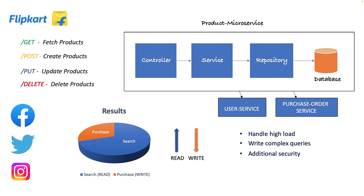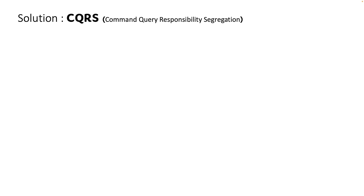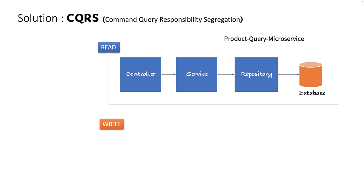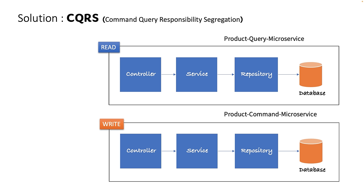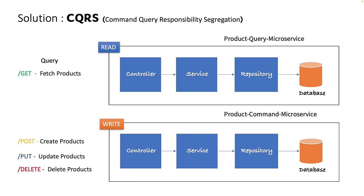To implement CQRS in your microservice, you simply need to segregate read and write operations. Create two different microservices: one for read operation and one for write operation. Define all GET or read operations — like fetch product API — inside the product query microservice. Define all write operations — POST, PUT, and DELETE — inside the product command microservice. In simple terms, keep all HTTP methods that modify the database in the command service, otherwise keep them in the query service.